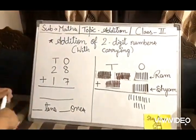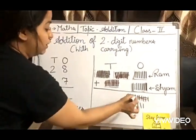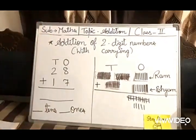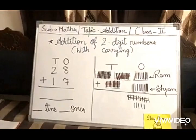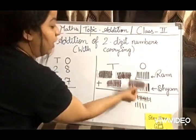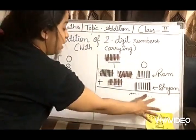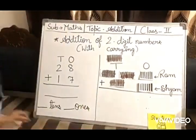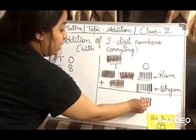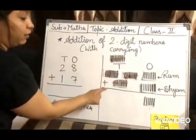But children, these 10 sticks will make a bundle. So we cannot count them here in ones - bundles are counted here in tens. So what we have to do? This bundle of 10 we can count here in tens, and only 5 sticks will be here. So the answer will be 5 here, and 1 will be counted in tens.